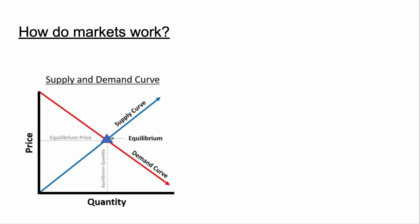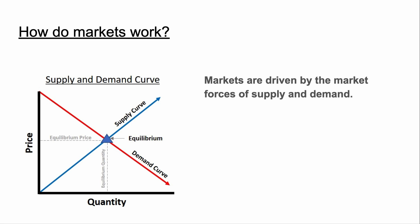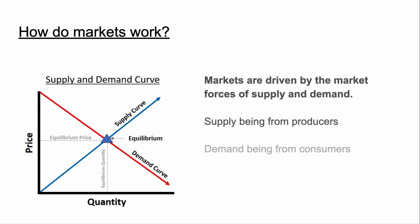On the left side of the screen there is a supply and demand curve. In blue is the supply curve and in red is the demand curve, and the equilibrium is where these two curves intersect — giving you an equilibrium price and an equilibrium quantity. Markets are driven by the market forces of supply and demand, supply being from producers and demand being from consumers.